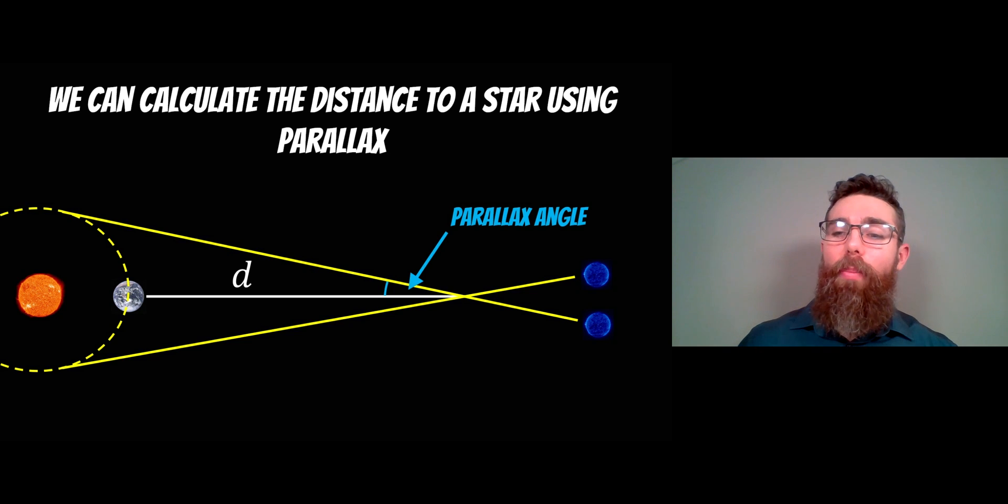So looking at a star we can measure its movement with respect to the distant stars in the background and we get an angle. Now we can then use some geometry to get d which is the distance to the star. The closer the star the larger that angle will be and the further away then the smaller the angle. So we can get the distance by using that. Now it takes a while to take that measurement. We need about six months worth of data to do that but we can get it.